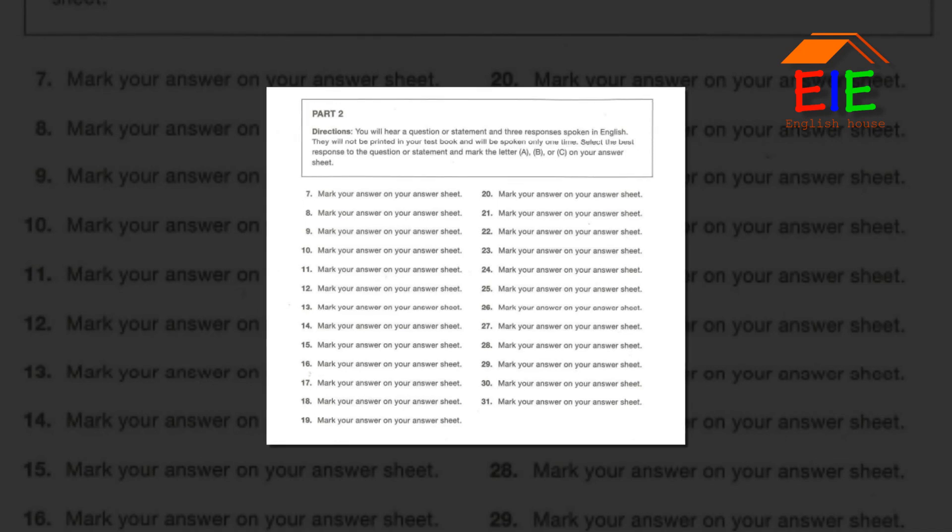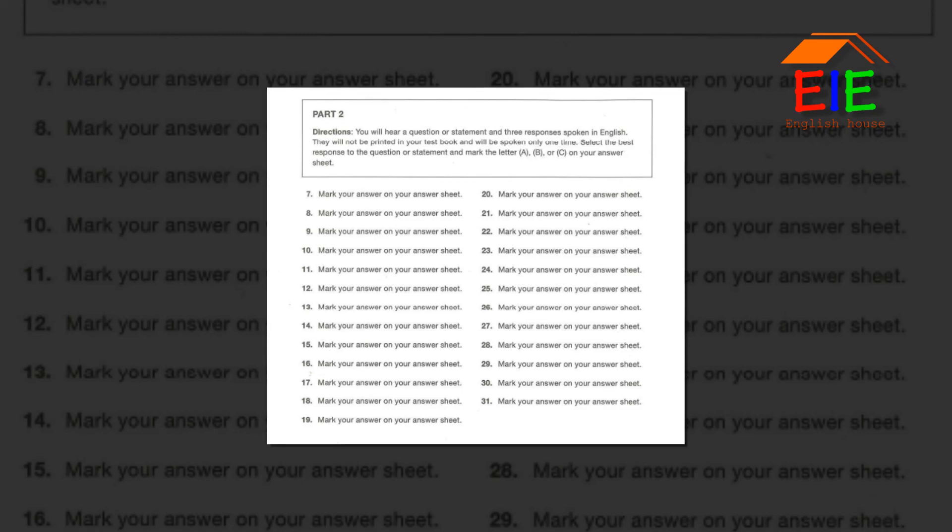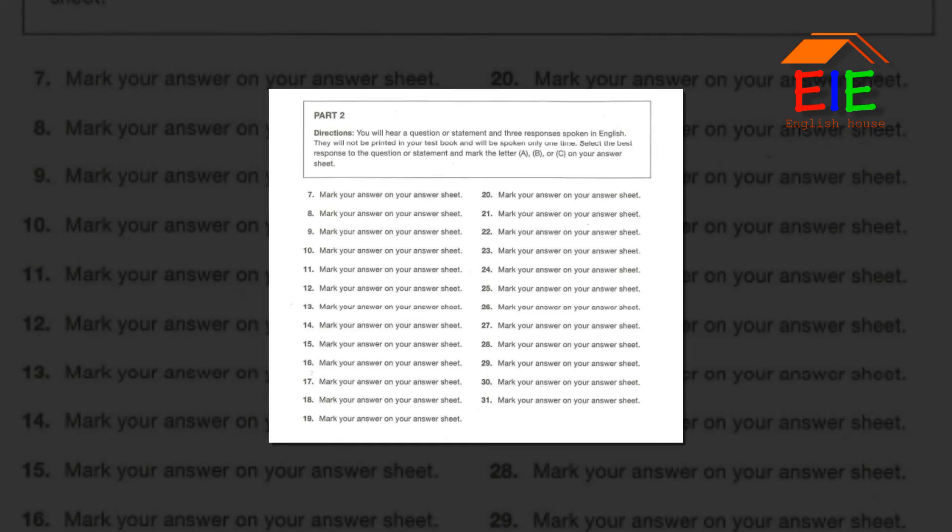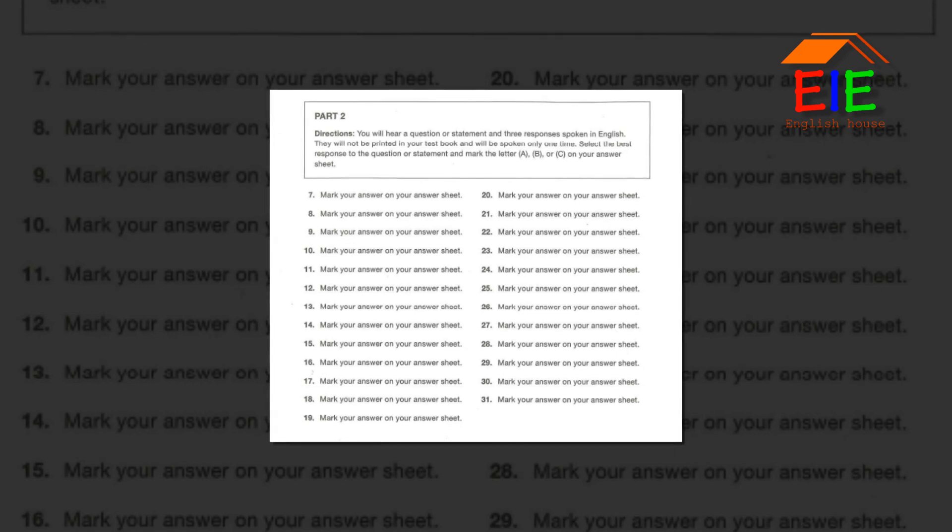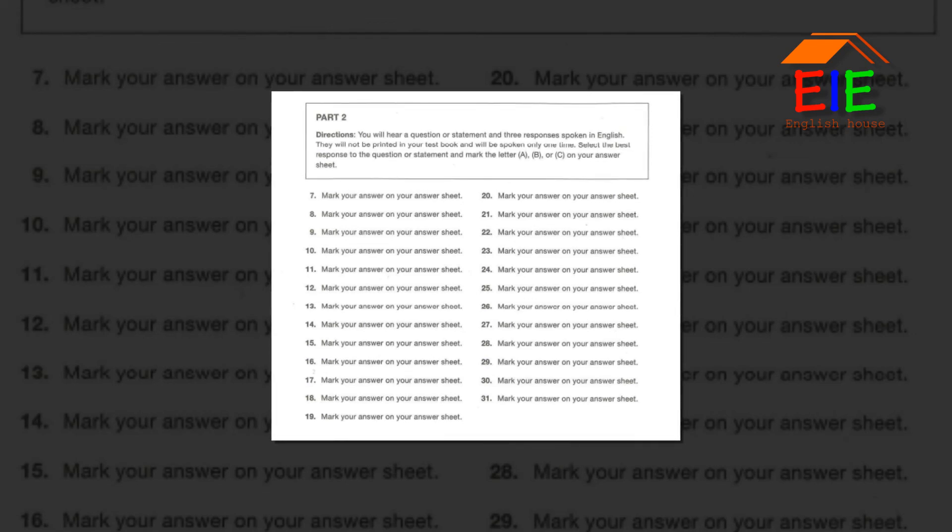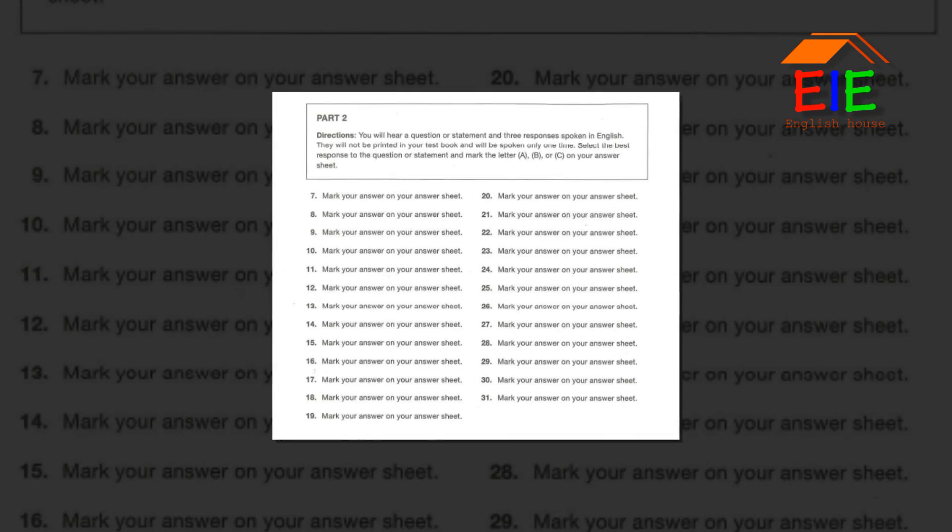Number 30. Ms. Jones arrived at 4 today, didn't she? A. All flights were delayed. B. No, departures are on the first floor. C. Actually, a 20% bonus. Number 31. How long did the team meeting last? A. Production costs are high. B. There was only one item on the agenda. C. No, we were the first to arrive.